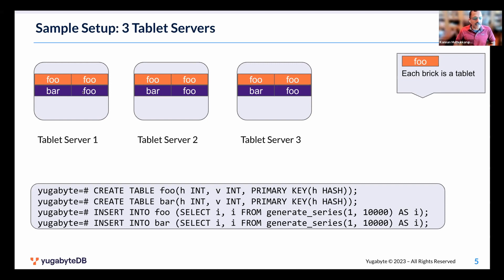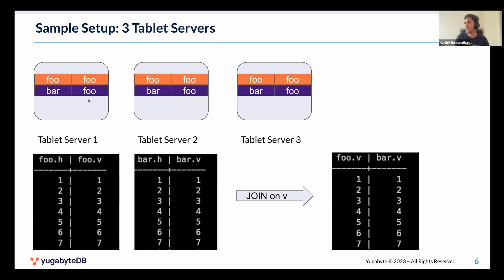There's a typo in the diagram — the lower section should have bar and foo both labeled as bar. Everything in purple is bar and everything in orange is foo. Let's take a sample query where we join the foo.v column with the bar.v column. As we walk through the explain analyze command, we'll see how each piece fits into this puzzle and how we're able to understand how query execution works here.